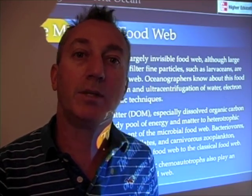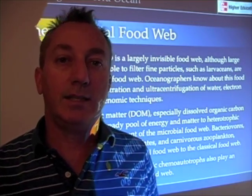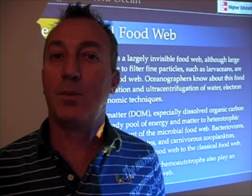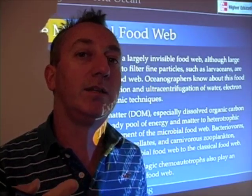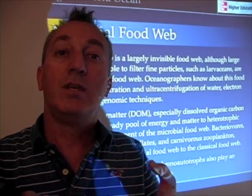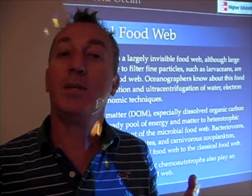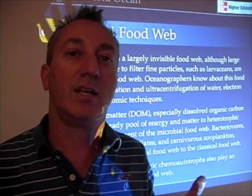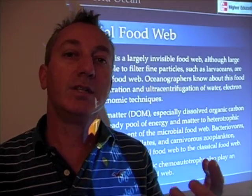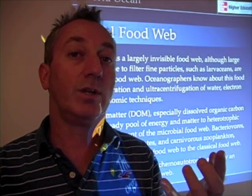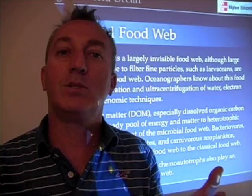Where does that dissolved organic carbon come from? It comes from the phytoplankton — phytoplankton leak dissolved organic carbon, or as they're eaten, dissolved organic carbon gets released into the ocean, or as phytoplankton naturally shed dissolved organic carbon through different processes, and as other organisms excrete their waste, dissolved organic carbon enters the ocean. Bacteria are there to take it up, and as bacteria grow on this dissolved organic matter, other organisms can eat them.